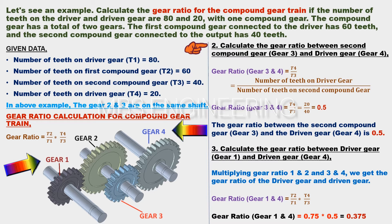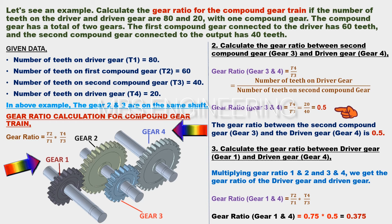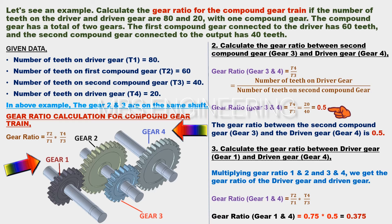Next, we calculate the gear ratio between the second compound gear (gear 3) and the driven gear (gear 4). The gear ratio for gears 3 and 4 equals T4 divided by T3, which is 20 divided by 40. Therefore, the gear ratio for gears 3 and 4 equals 0.5.